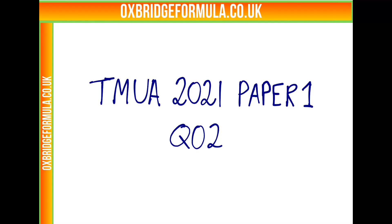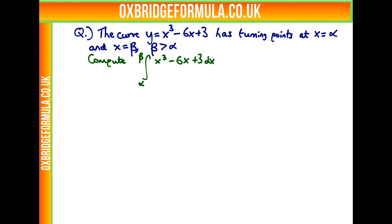This is TMUA 2021 paper 1, question 2. This question gives us the curve y equals x cubed minus 6x plus 3, and we're told it has turning points at x equals alpha and x equals beta, with beta being bigger than alpha. We're asked to compute the integral of this curve between alpha and beta.